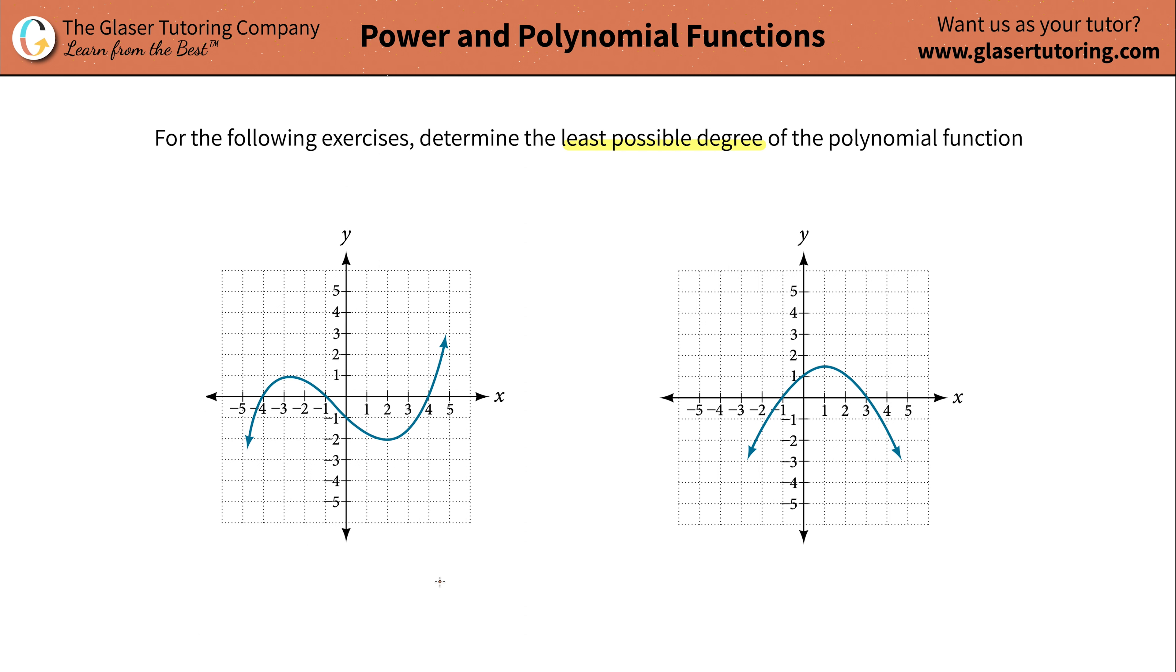So let's take a look at this example first. So to find the least possible degree of a polynomial, it's based on the shape, especially if you're given the graph.